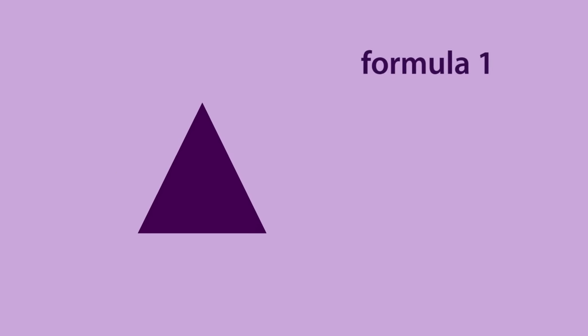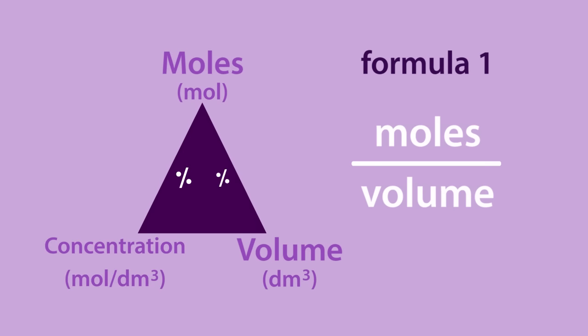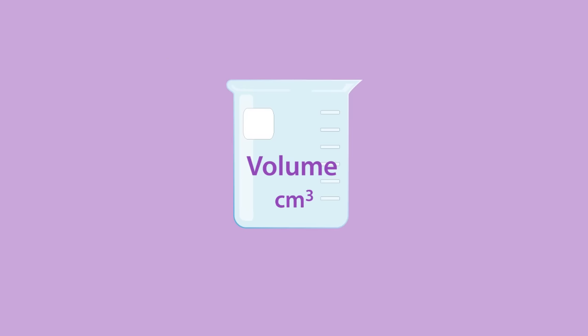The first way of calculating concentration is to use moles, an amount of a chemical substance, and divide it by its volume. Here's the formula triangle for this. Most of the time, volumes are measured in cubic centimetres, so 1000 cubic centimetres is equal to 1 decimetre cubed, or 1 litre.